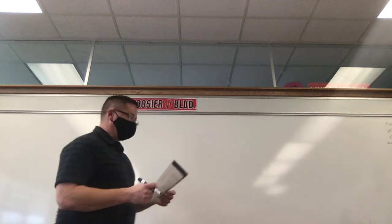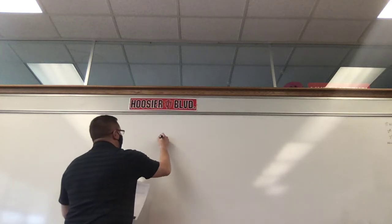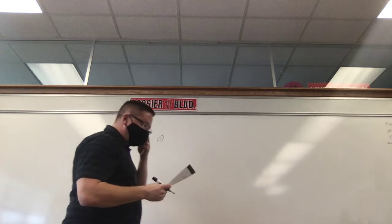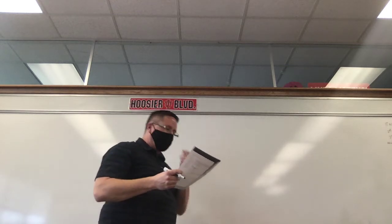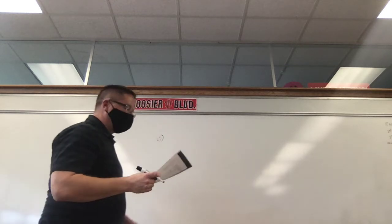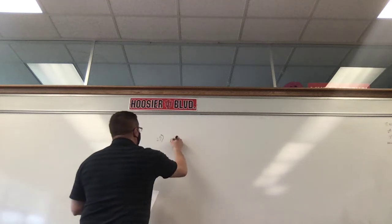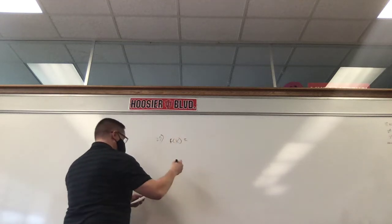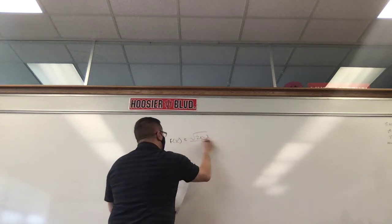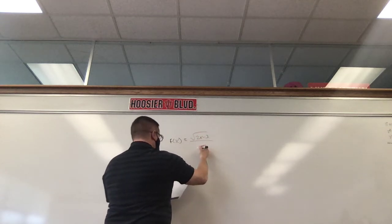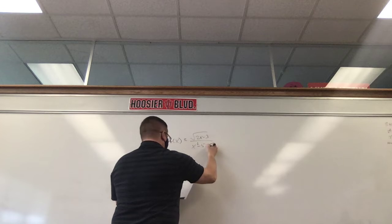So we're on 27. My goal is if we can get through number 33, that'd be great. Definitely 27, 29, 31, we'll see if we can get 33 also. They give us f of x equals 2x minus 3 over x squared minus 5x plus 4.